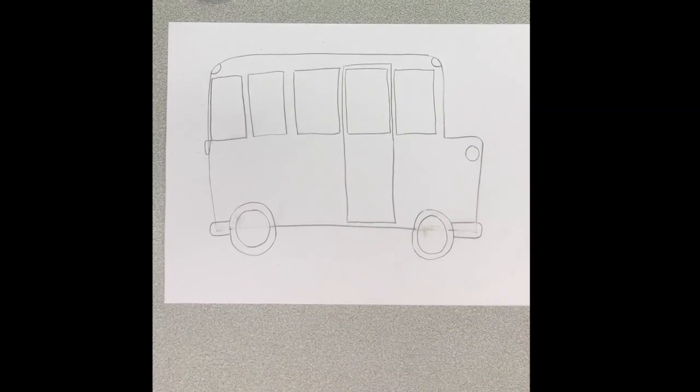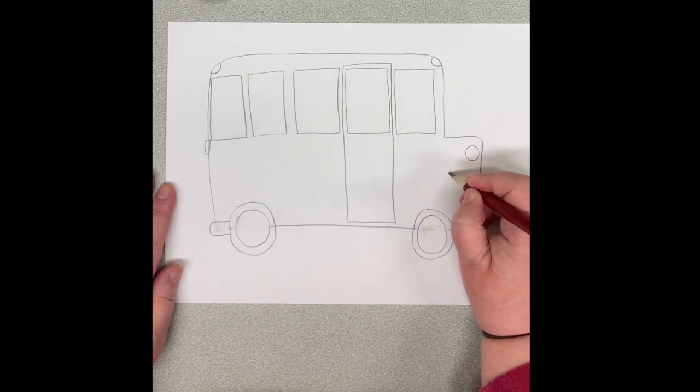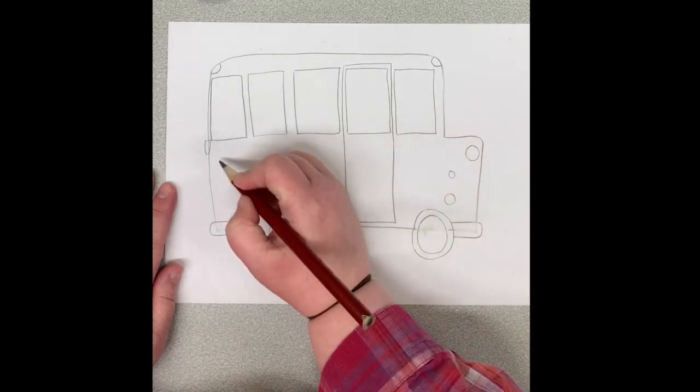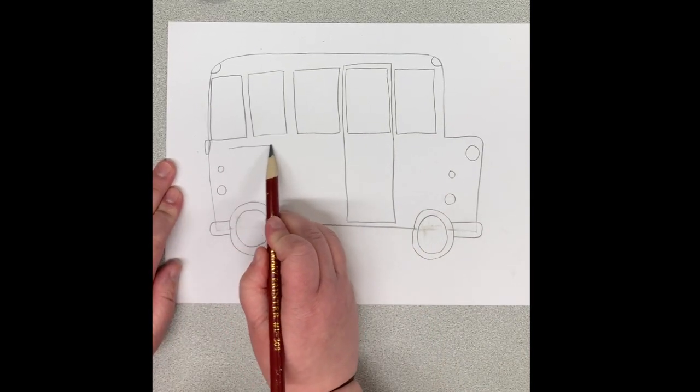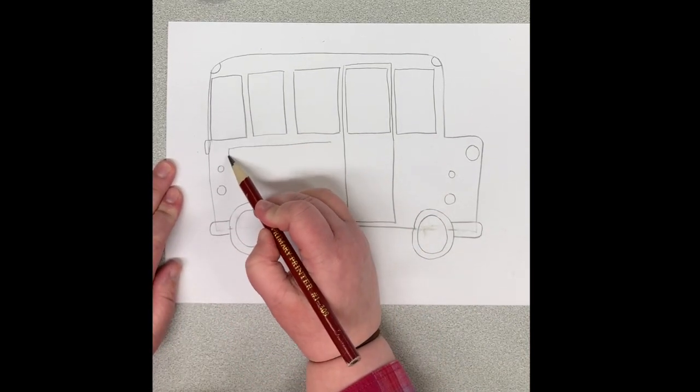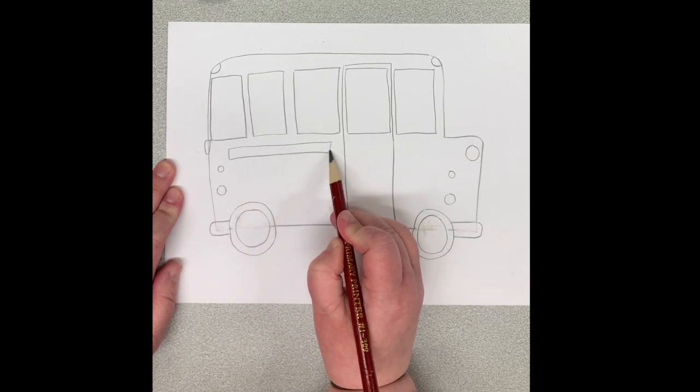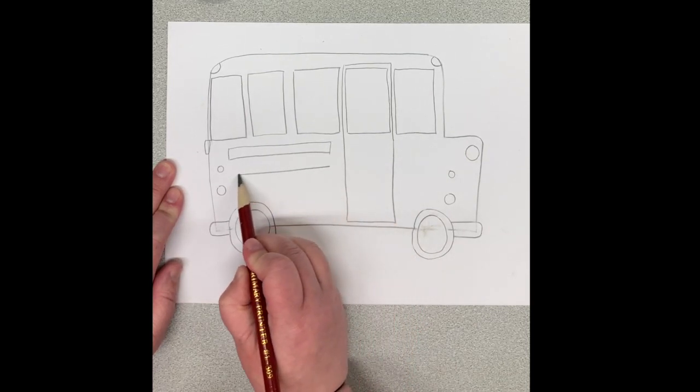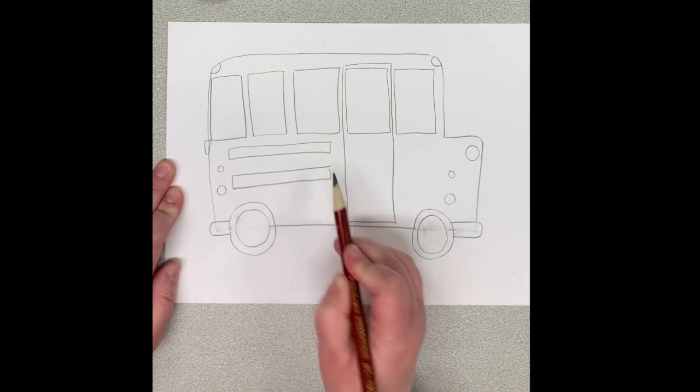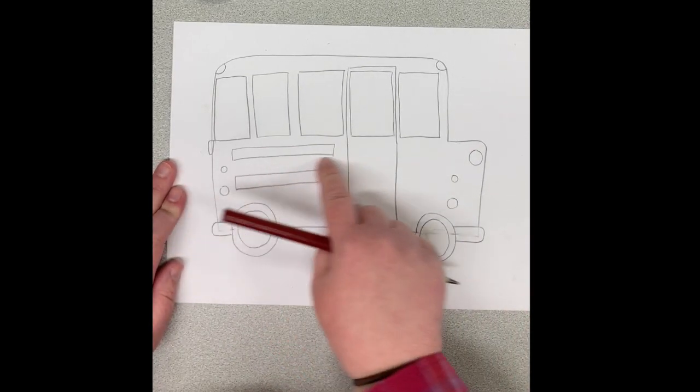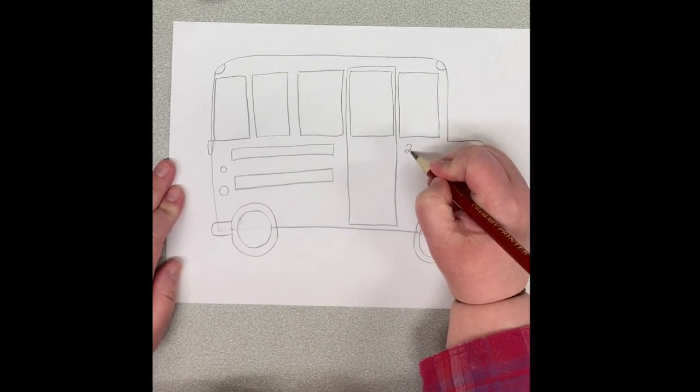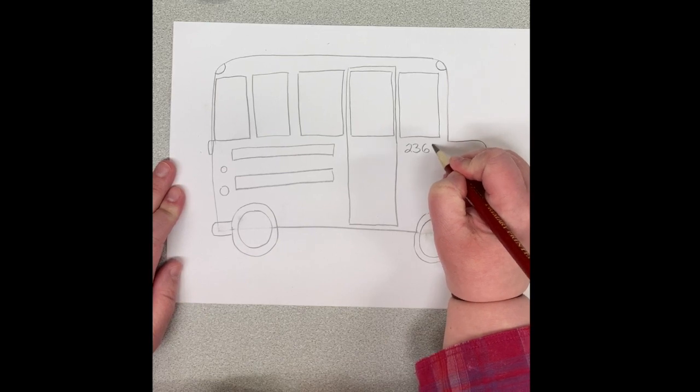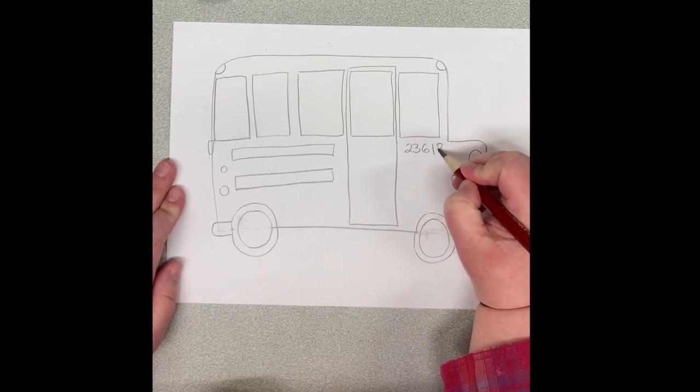Our last step is just going to be adding some more details to our bus. I'm going to add some circles here, and I think I'll do the same over here. Then I'm going to add some lines like this. Quite often buses will have a bus name, they might say School District 60 like in our school. You can do some writing on here if you want, you could add a number for your bus. I'm going to call this bus number 2361B.